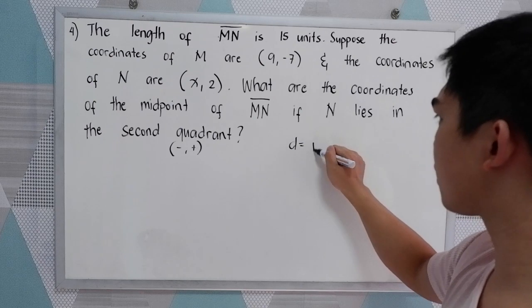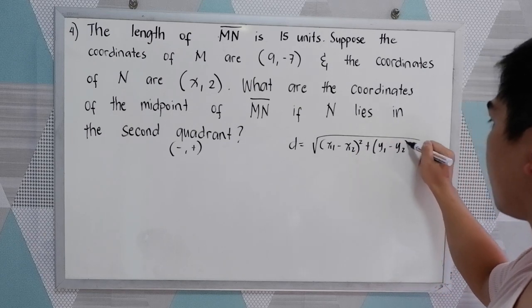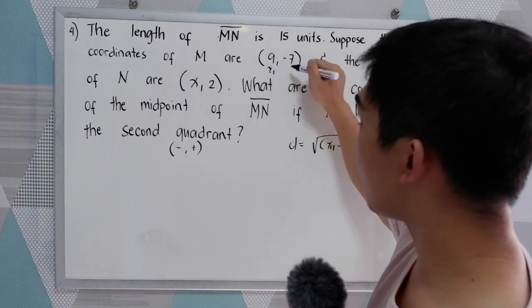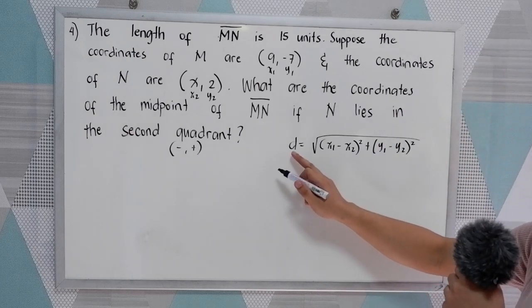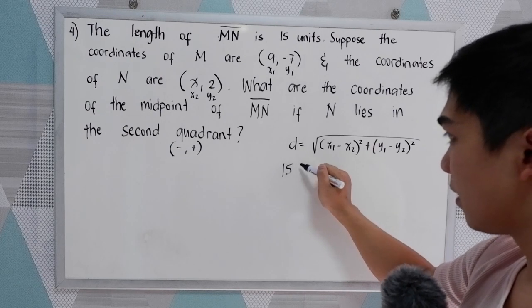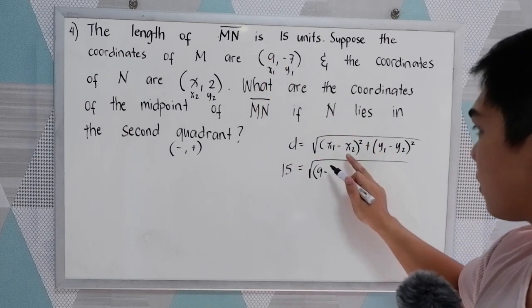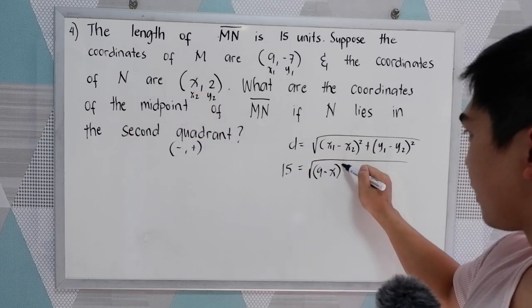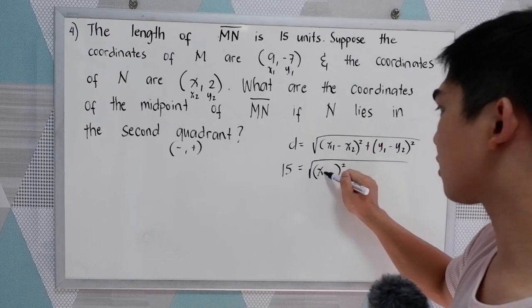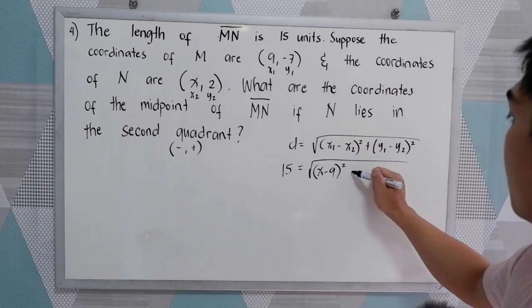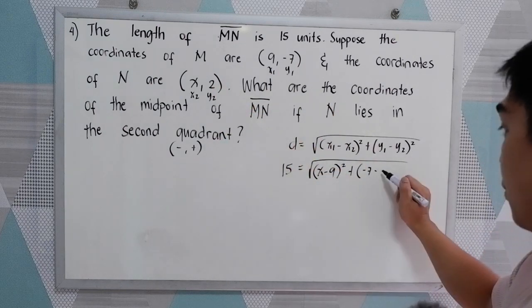The distance formula is: d equals the square root of (x sub 1 minus x sub 2) squared plus (y sub 1 minus y sub 2) squared. Here, x sub 1 and y sub 1 are from M, and x sub 2 and y sub 2 are from N. Substituting: d is 15, equal to the square root of (9 minus x) squared — or equivalently (x minus 9) squared — plus (negative 7 minus 2) squared.